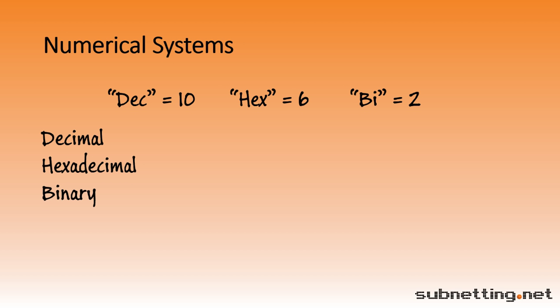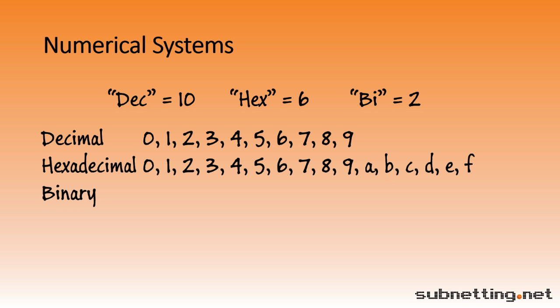You should already be familiar with the decimal system, which is the numerical counting system we all learn from a young age. The decimal system uses the digits 0 through 9. Hexadecimal means 6 and 10, or 16 digits. Hexadecimal uses the 10 decimal numbers and the first 6 letters. Note that when writing hexadecimal, you can use either upper or lowercase letters. Binary has just two digits, 0 and 1.